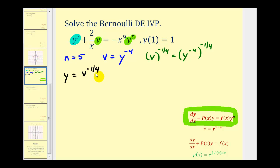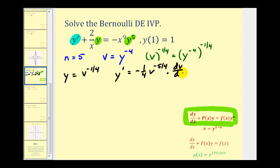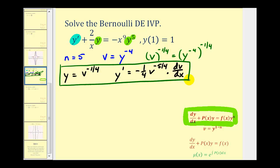Now we want to find y prime or dy/dx. This will require implicit differentiation because we have y in terms of v, not in terms of x. So y prime is going to be equal to negative 1/4 times v raised to the power of negative 5/4 times dv/dx. We're applying the chain rule here because we want the derivative in terms of x, not just v. Now using these two equations we can perform substitution into the original differential equation.